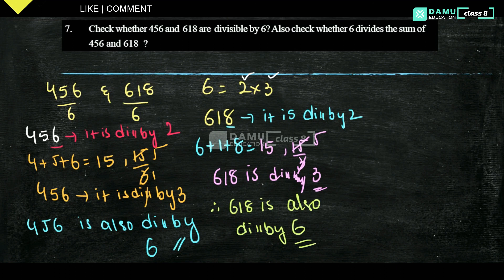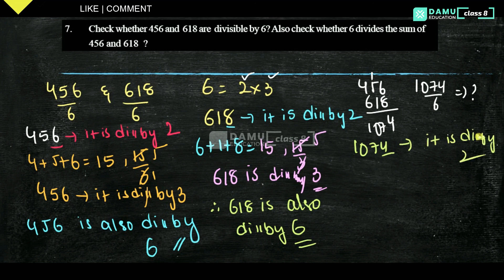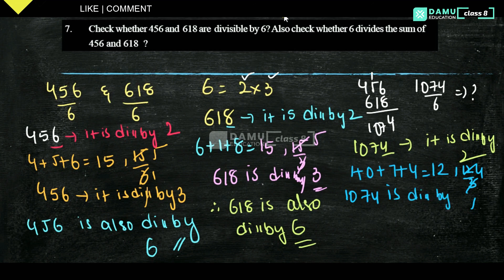Next, check whether the sum is divisible by 6. The sum is 456 plus 618: 6 plus 8 equals 14, carry 1, so we get 1074. Now check 1074 with the divisibility rule of 2: unit digit is 4, so it is divisible by 2. Then 1 plus 0 plus 7 plus 4 equals 12, and 12 divided by 3 — 3 fours are 12 — so 1074 is divisible by 3. Therefore, 1074 is also divisible by 6.